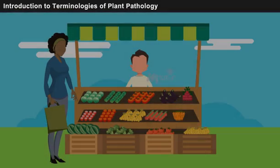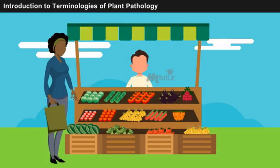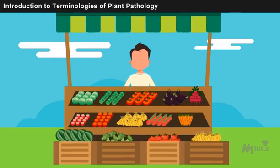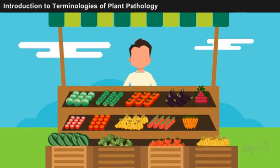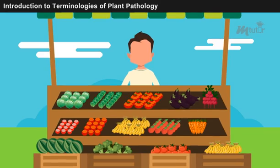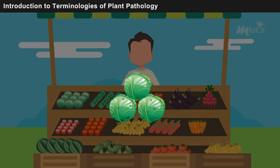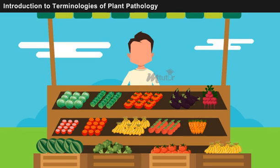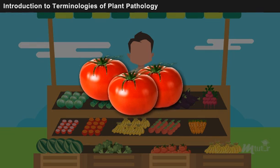You are entering a vegetable stall to pick some vegetables for your family. You can find fresh fruits and vegetables arranged all over the shop. Do you pick them randomly without examining? Never — you closely examine every fruit and vegetable before purchasing, won't you?